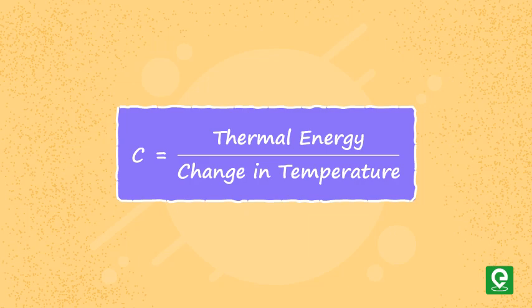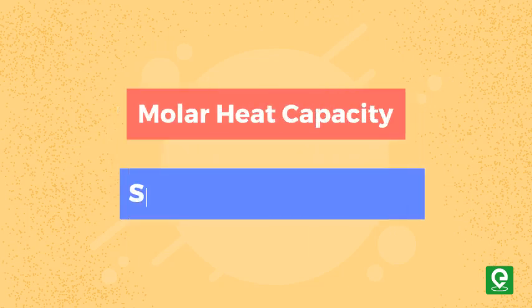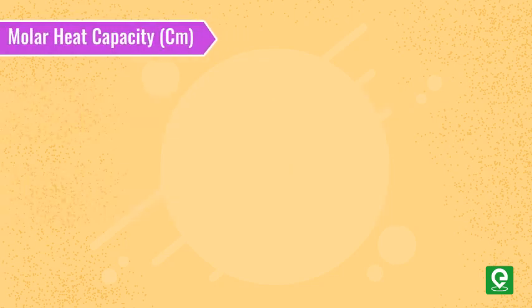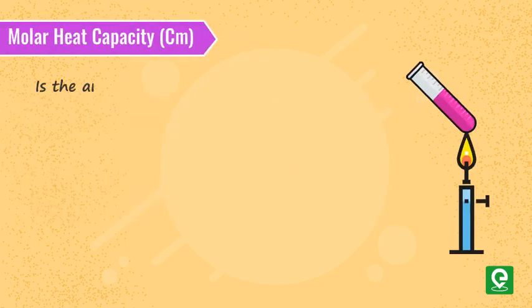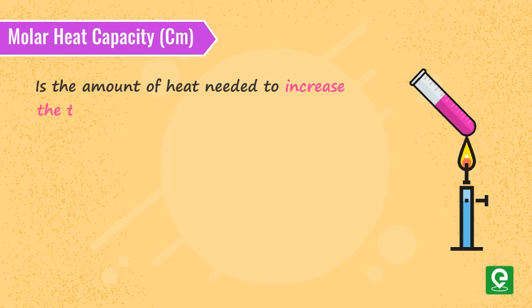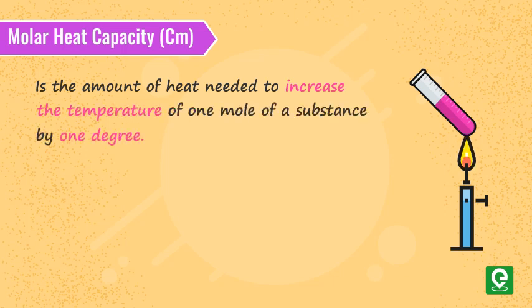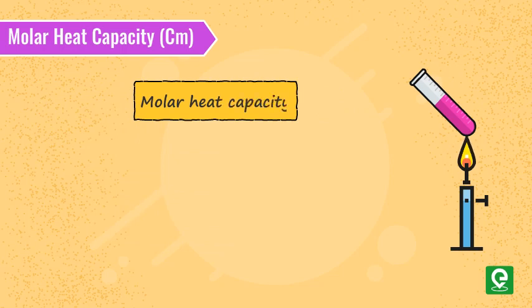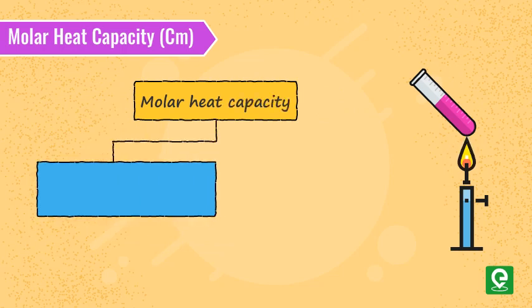To help the analysis of systems having certain specific dimensions, molar heat capacity and specific heat capacity are used. Molar heat capacity is the amount of heat needed to increase the temperature of one mole of a substance by one degree. It is expressed in joules per mole per degree.